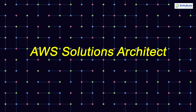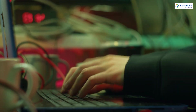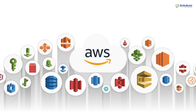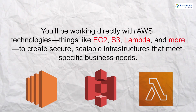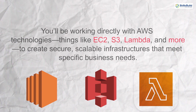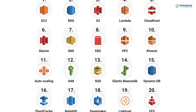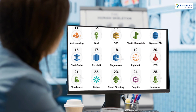Let's start with the AWS Solutions Architect. As an AWS Solutions Architect, your primary focus will be on designing and implementing robust solutions using AWS's suite of services. You'll be working directly with AWS technologies – things like EC2, S3, Lambda, and more – to create secure, scalable infrastructures that meet specific business needs. Your role is very hands-on, involving everything from setting up cloud environments to ensuring performance optimization, security, and cost efficiency. If you enjoy working with cutting-edge cloud tools and like the idea of bringing technical solutions to life, this role is an ideal starting point.